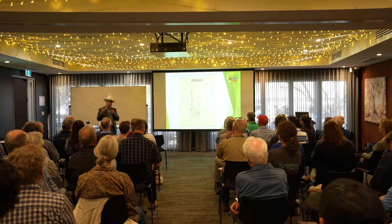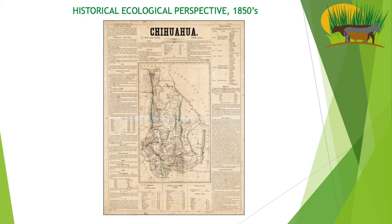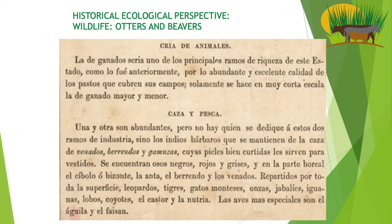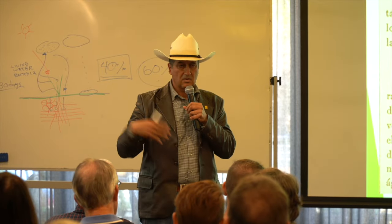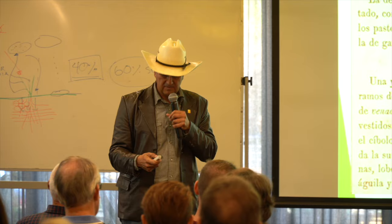This is a map from the 1850s giving an ecological perspective of our state. It says the climate was very nice — we don't have that climate anymore. What grabbed my attention was the number of wildlife: black bears, grizzly bears, bison, antelope, and even otters and beavers all across the state, which are tied to water. The old roads had to have water for the mules — those springs are gone. We've been breaking the water cycle for decades and now it's getting tougher.